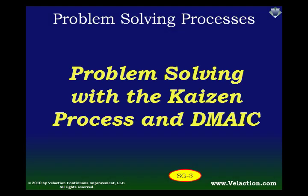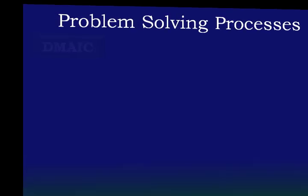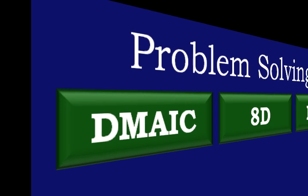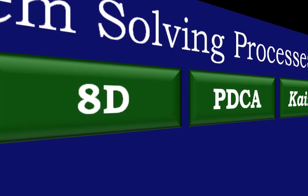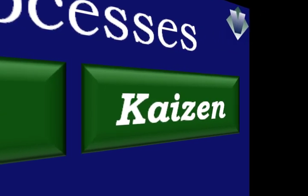Let's get one thing out of the way right off the bat. You might be thinking that the title of this class is a bit unwieldy. Let's take a step back and think about the most common forms of problem solving. DMAIC is the acronym used for Six Sigma. 8D or 8 Disciplines and PDCA are also both common problem solving methods, and of course we have Kaizen.